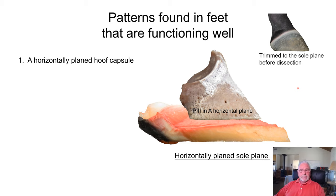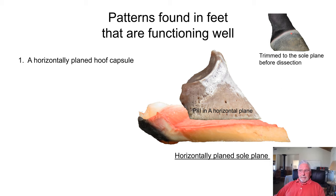All my research is based on trimming to uniform sole thickness, or trimming to the sole plane — the trim is the same with different reasons. Trimming to sole thickness tells us that the sole, where it interfaces with the white line and the hoof wall, is fairly uniform in its vertical depth — nothing's perfect, but it's close enough to use as a standard. When we trim to the sole plane, we have a horizontally planed hoof capsule, and the horse is standing on its true foot.